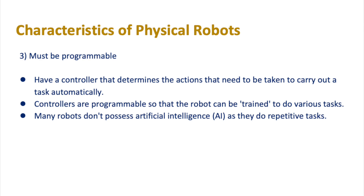The final characteristic of a physical robot is that it must be programmable. It should have a controller that determines the actions needed to carry out a task automatically. These controllers or microprocessors are programmable so the robot can be trained to do various tasks. Many robots don't possess artificial intelligence because they often do repetitive tasks — if all you're doing is lifting and placing something in a van, we don't need AI for that. Robots using AI are becoming more common, but the majority in use today are repetitive task driven robots.